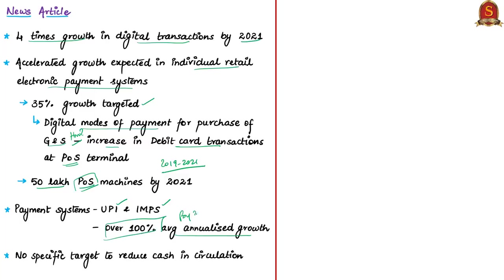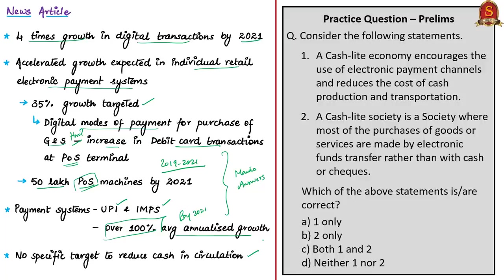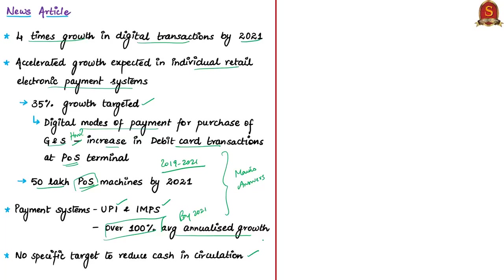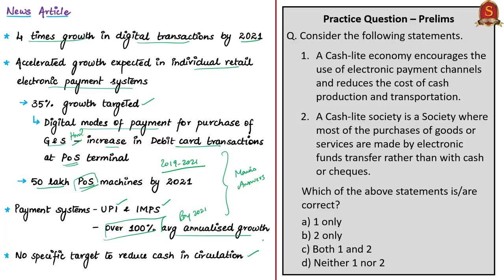You may use all these points as answers if you need to project India's expectations to achieve a cashless or cash-light economy in your mains answers. It has been observed that there is no specific target to reduce cash in circulation in achieving a cash-light economy. Please have a look at the practice prelims question. With this, we come to the end of the analysis session. Let us now move on to the practice questions discussion session.